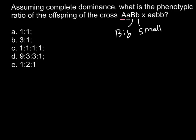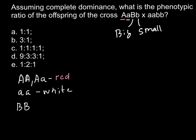What combinations are possible? Capital A capital A, and capital A small a — both these combinations would produce a red-flowered plant. When we have small a small a, the color of the flowers would be white. When we have capital B capital B, and capital B small b, the size of the plant would be big. And when we have small b small b, the size of the plant would be small.